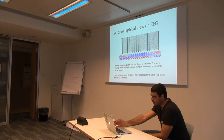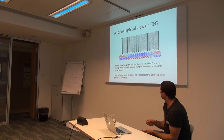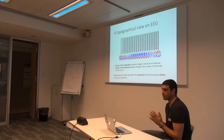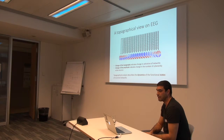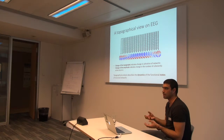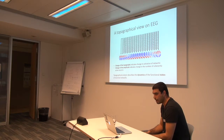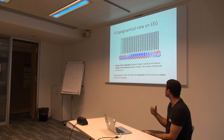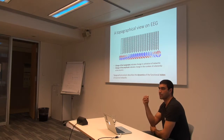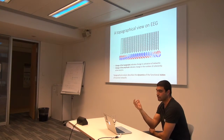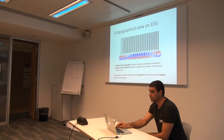If we look at topographies of a time series, we can look at changes in the configuration of the topography, which tells us something about changes in the activity of the underlying networks. The main assumption about the topography is that some neural generators produce it. We can also look at differences in amplitude, which translates into changes of the strength of coherently active neurons. So a topographical analysis describes the dynamics of the functional states of neural networks.